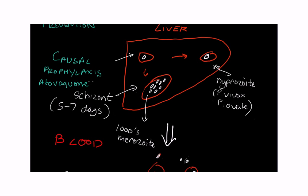And that basically prevents these schizonts from forming. Because it's a causal prophylaxis, you only need to take it for about a week after you have left the malaria endemic area to prevent any liver cells that have been infected from turning into schizonts itself.